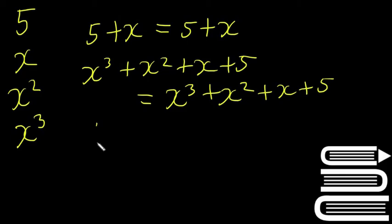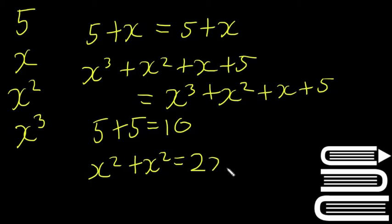then you can add them together. So 5 plus 5 will add together to make 10. Same way, x squared plus x squared will add together to make 2x squared. So again, if they're not the same term, you can't add them together.